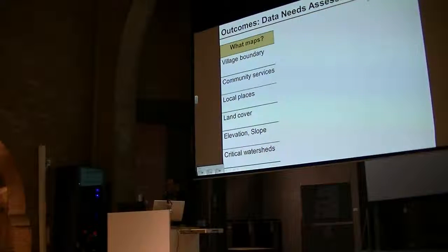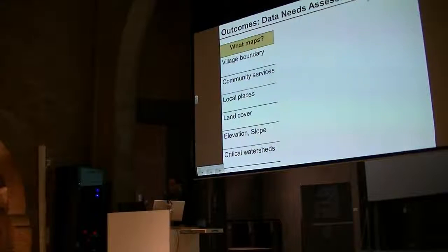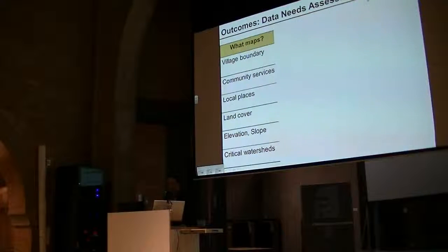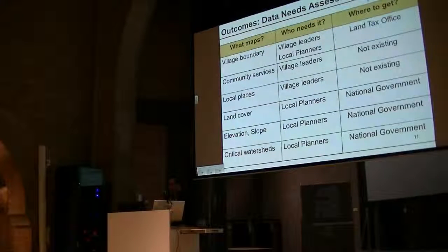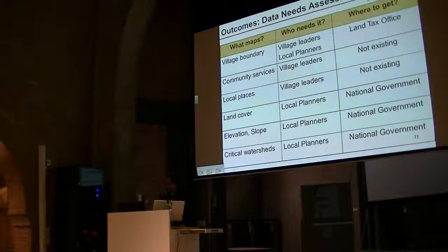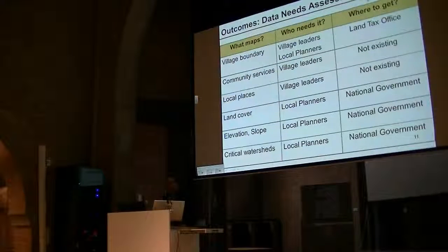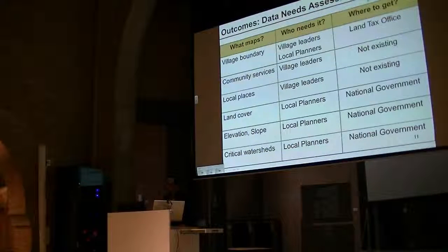What maps did they ask from us? They needed village boundary maps, community services, local places, land cover, elevation slope, and critical watersheds. These maps are also what we needed for our own research work on soil erosion and landscape patterns — plus, these are the maps needed by village leaders and local planners. We have to look for the sources of information; some of them don't exist, like community services maps, and some come from the national government but with such poor quality that we have to analyze the data ourselves.